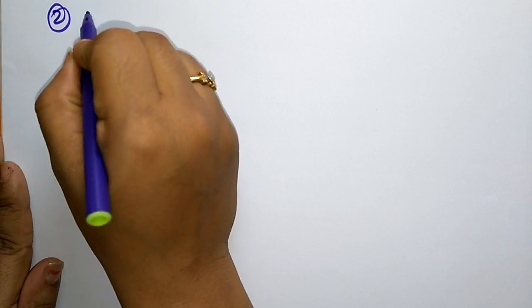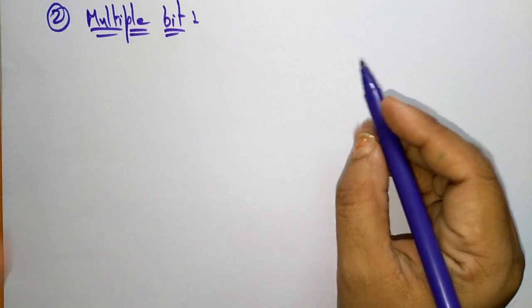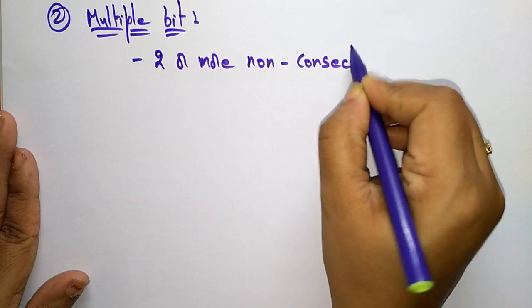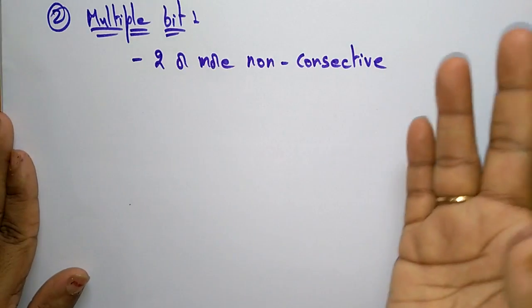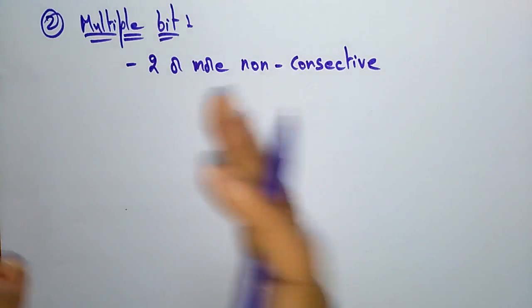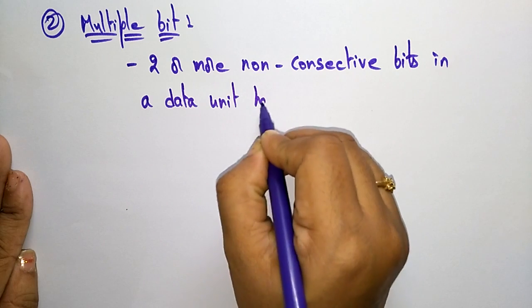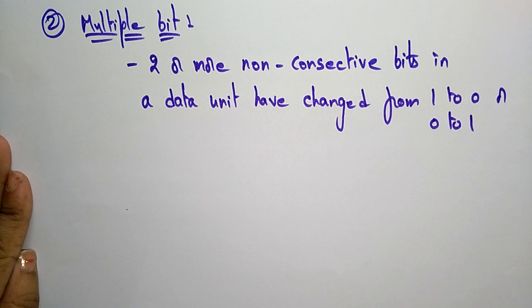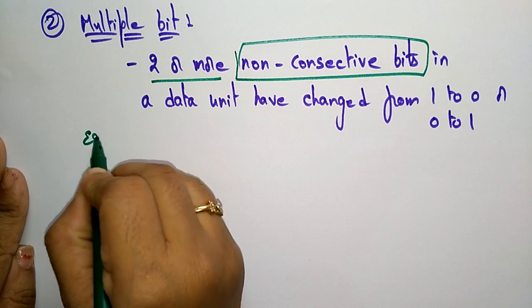The second type of error is the multiple bit error. Multiple bit means two or more non-consecutive bits — not in a continuous ordering. Non-consecutive means they are not in sequence; bits may be at the seventh position, sixth position, fifth position, third position, and so on. Two or more non-consecutive bits in a data unit have changed from 1 to 0 or 0 to 1.